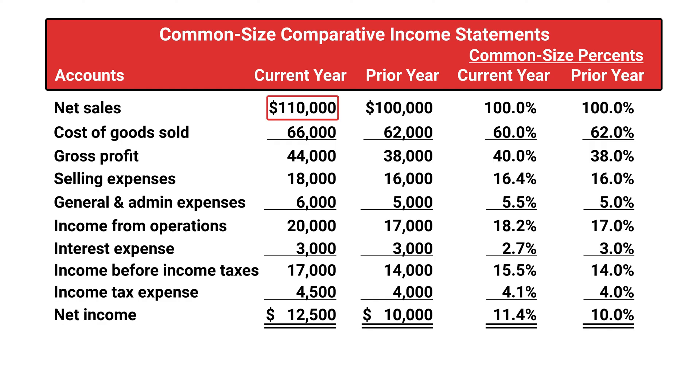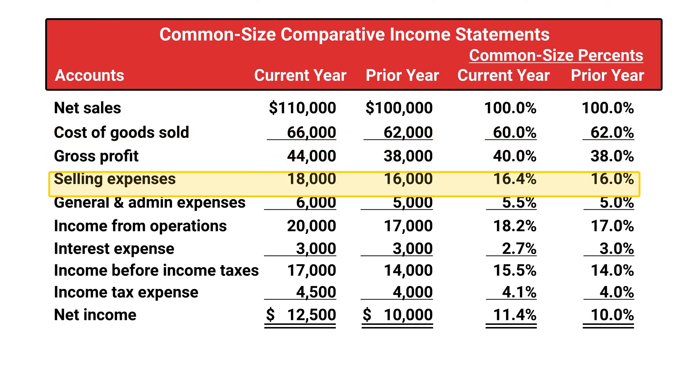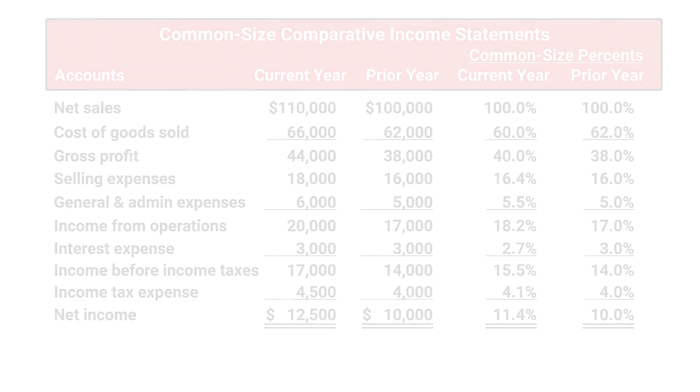It is called vertical analysis because we compare numbers up and down, rather than side to side like we do with horizontal analysis. To perform a vertical analysis, we usually compute something called common size percentages.